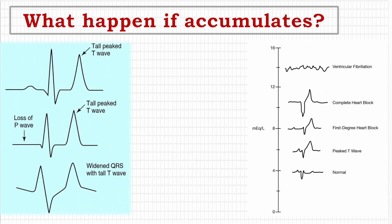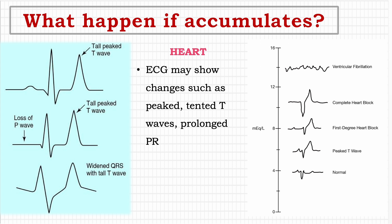If potassium accumulates beyond normal, you can find abnormal ECG rhythms. This is dangerous and can sometimes lead to heart block or cardiac arrest, hence monitoring ECG for hyperkalemic patients is very important. ECG variations include tall or peaked T-waves. If you find tall T-waves with no P-wave or with a prolonged PR interval, you can suspect heart block. A wide and bizarre QRS complex with tall T-waves is suggestive of complete heart block due to hyperkalemia.